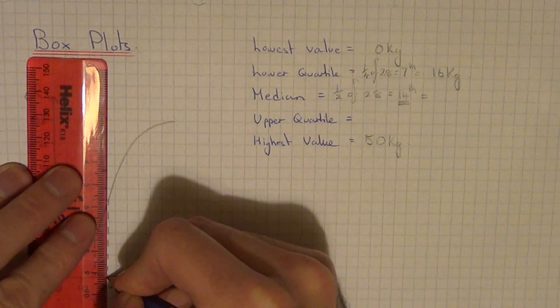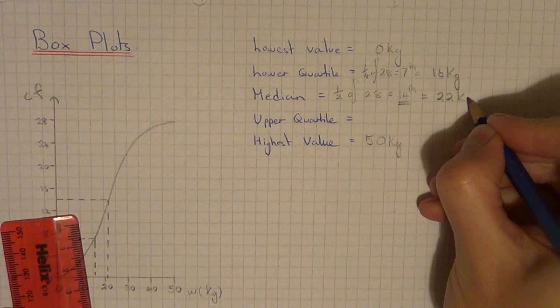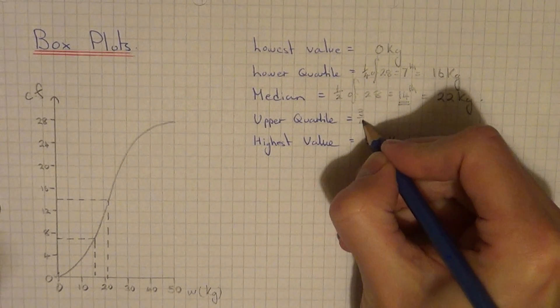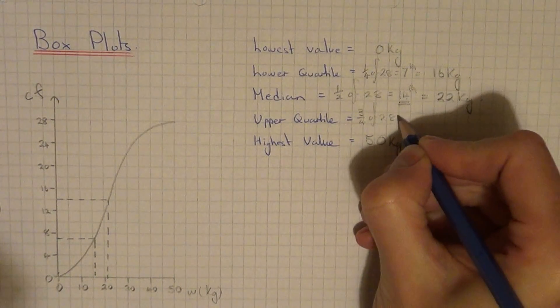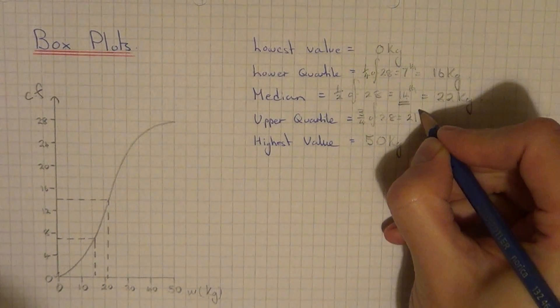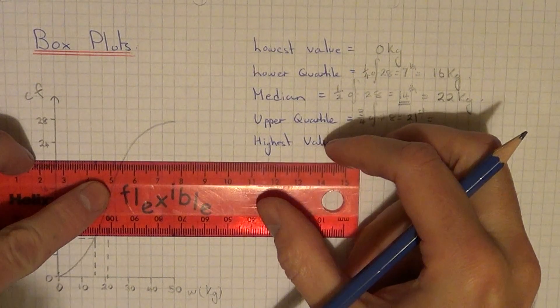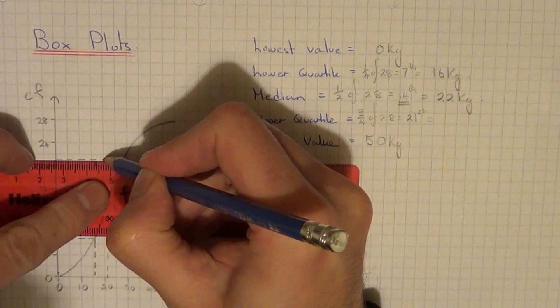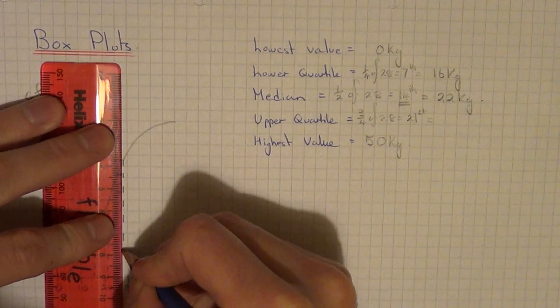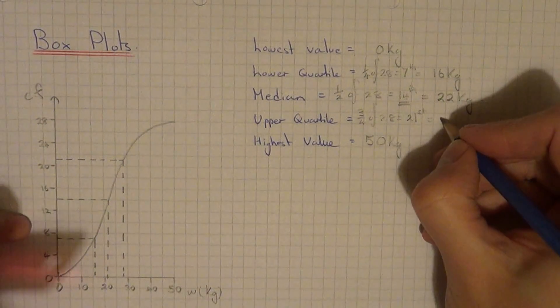So finally the upper quartile is three quarters of the total frequency, so three quarters of 28 is 21. So the upper quartile occurs on the 21st person, so if you go to your cumulative frequency graph, read this one off. So this one has come out as about 28 kg.